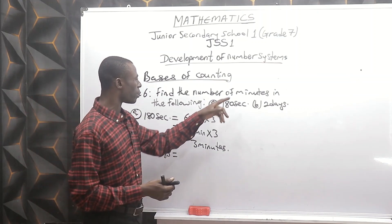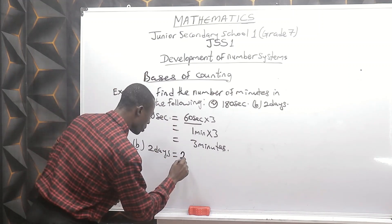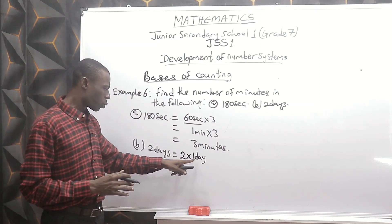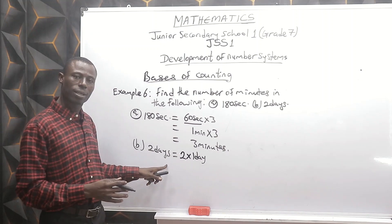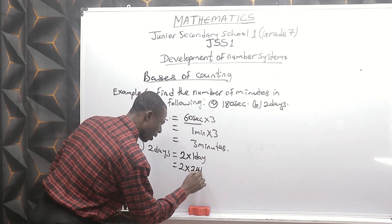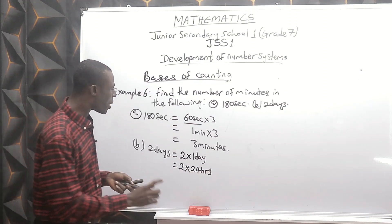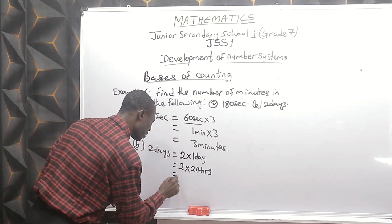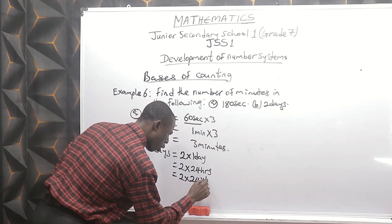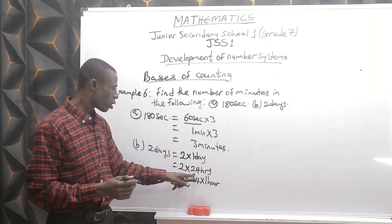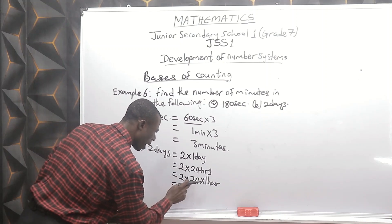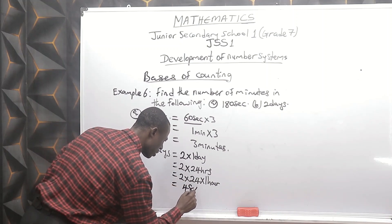For question B, we have two days and we are to find our answer in minutes. Two days is two times one day. Two times one day — don't forget, one day is 24 hours. So two times 24 hours gives us 48 hours.